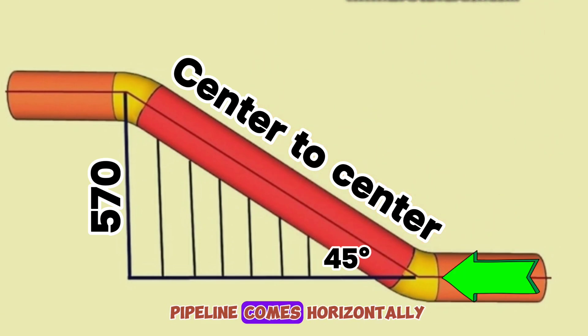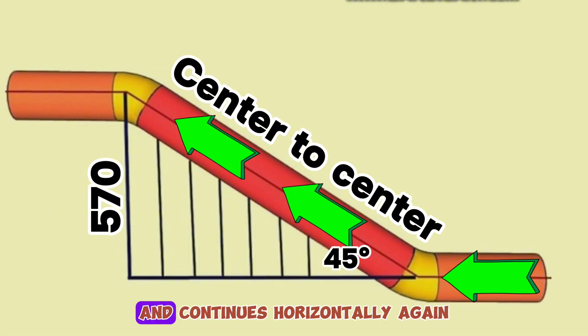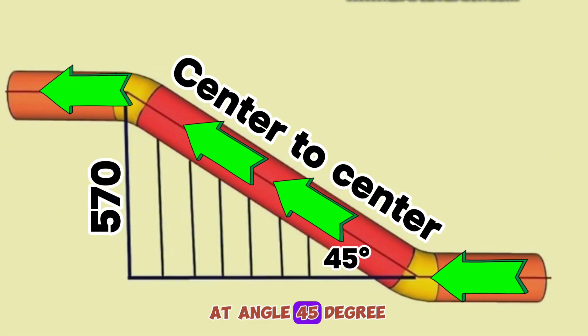As you see, the pipeline comes horizontally, then goes up at a 45-degree angle and continues horizontally again at a 45-degree angle with a height of 570 mm.